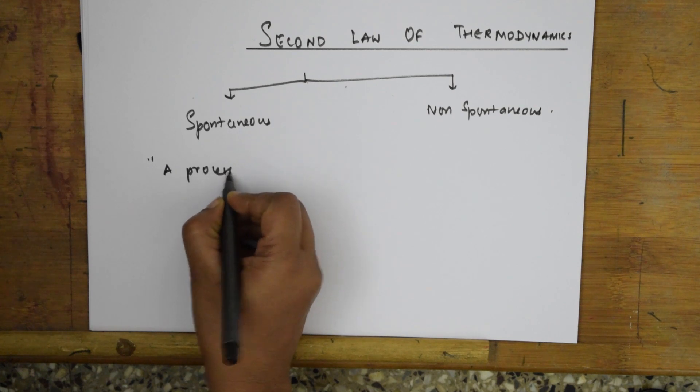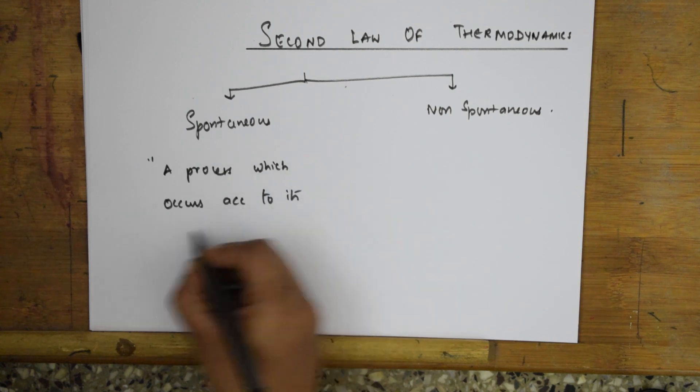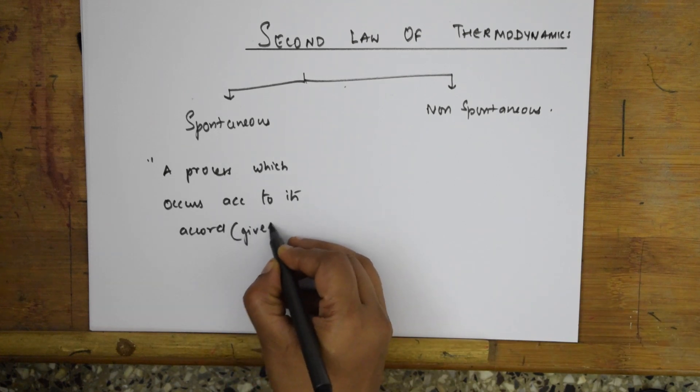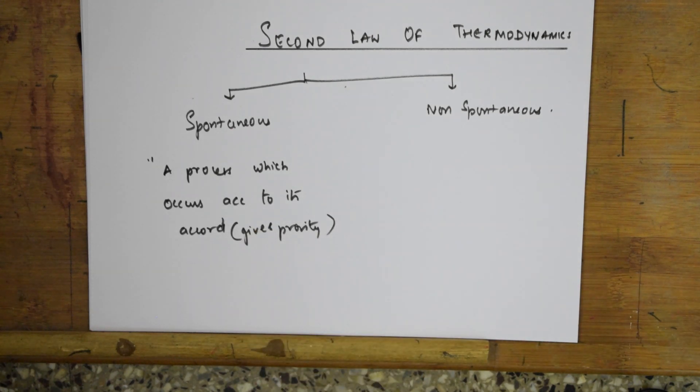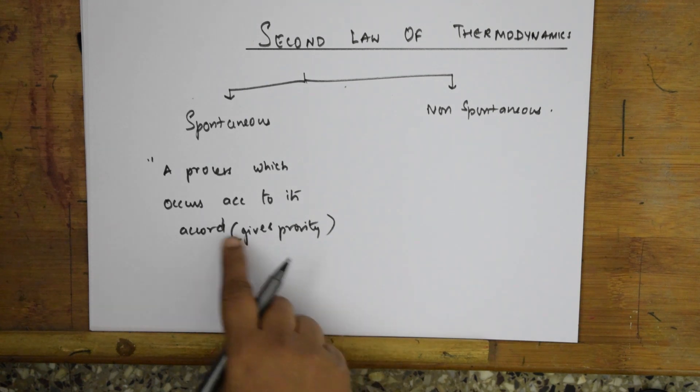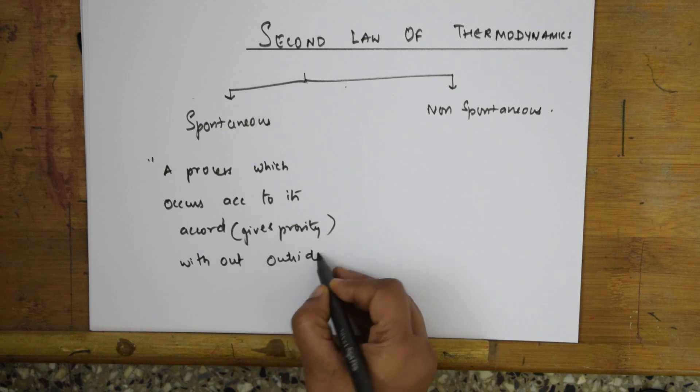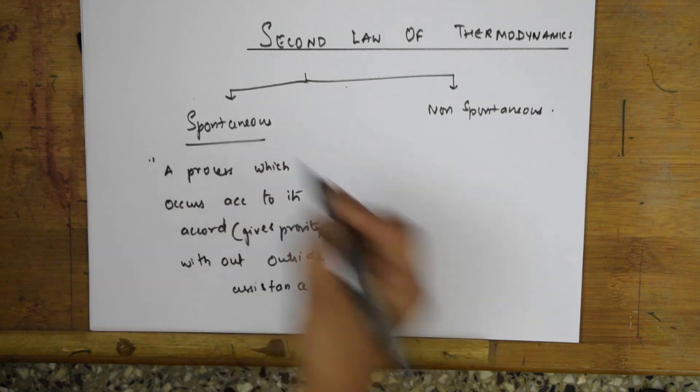It is a process which occurs according to its accord - it goes on according to the pace, continues according to its own pace. It gives priority without outside help, without outside assistance or help. That is spontaneous process. Assistance or help.